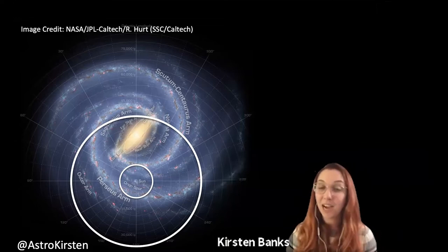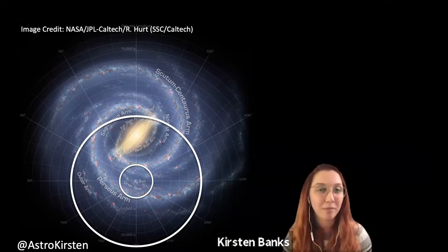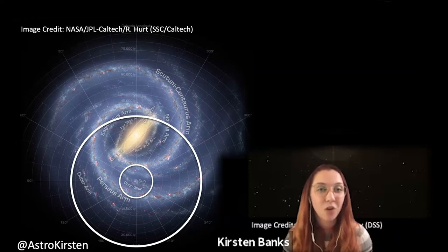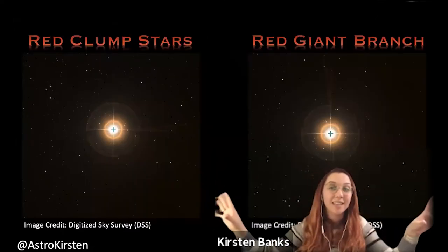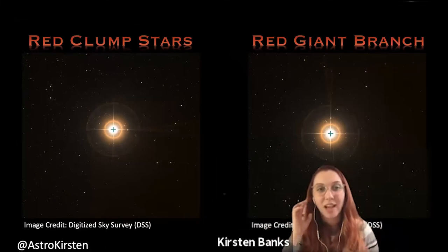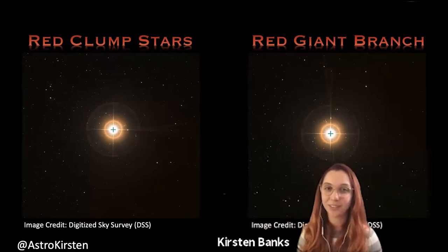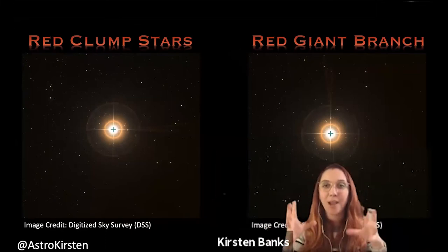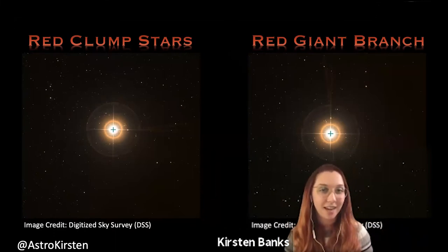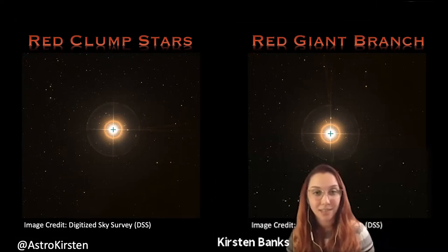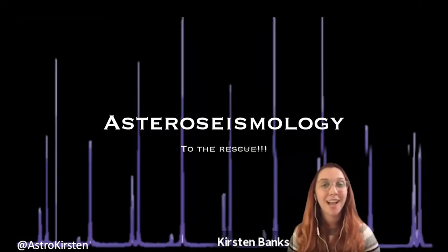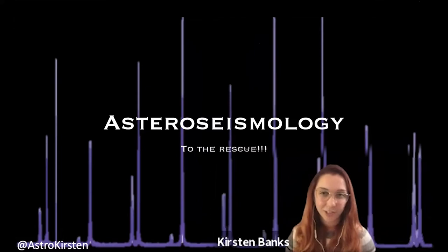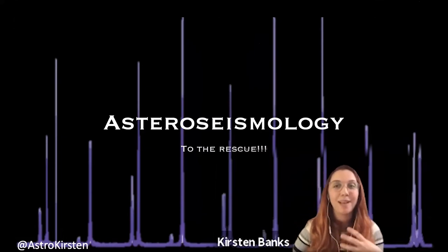There is one catch: red clump stars are very similar in color and temperature to another type of evolved star called a red giant branch star — they basically look exactly the same. But red giant branch stars are not standard candles. So we need to find a way to effectively distinguish these stars so that we can accurately map the galaxy with reliable red clump stars, and this is where astro-seismology comes into the equation.